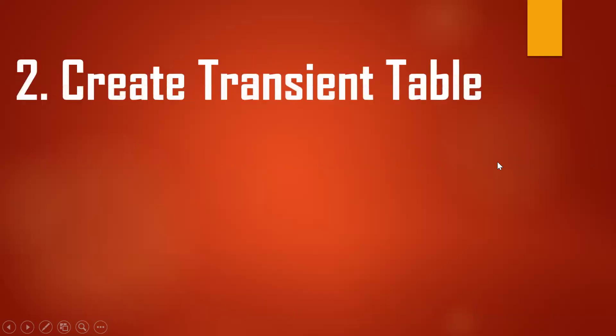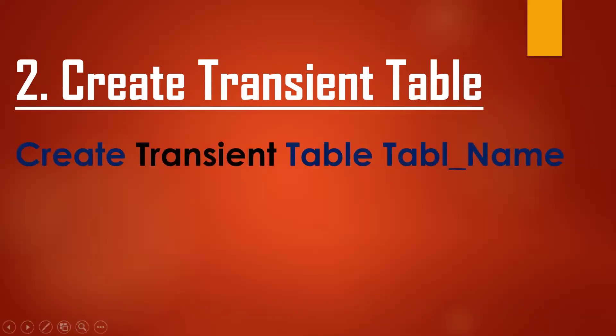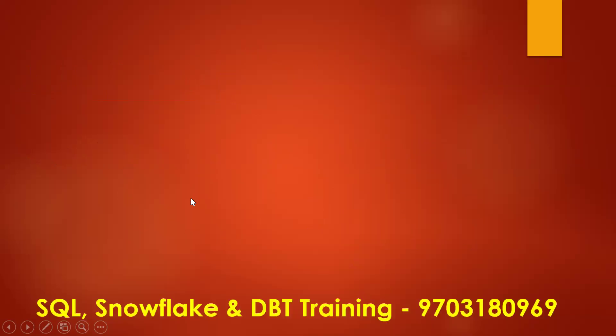The second one is how to create a transient table. You know there are permanent tables, transient tables, and temporary tables. To create a transient table, use the TRANSIENT keyword: CREATE TRANSIENT TABLE table_name with the column and data type.